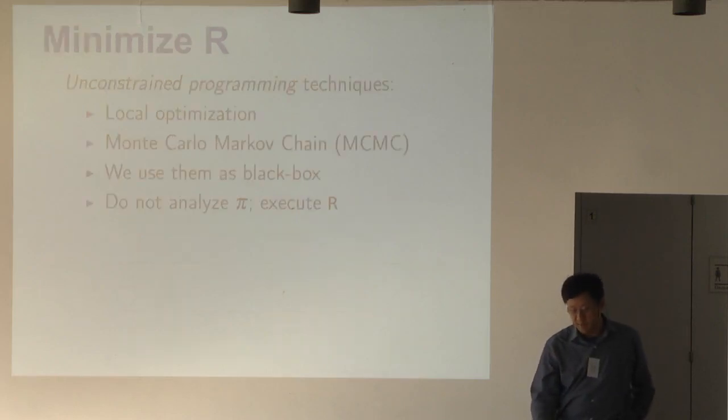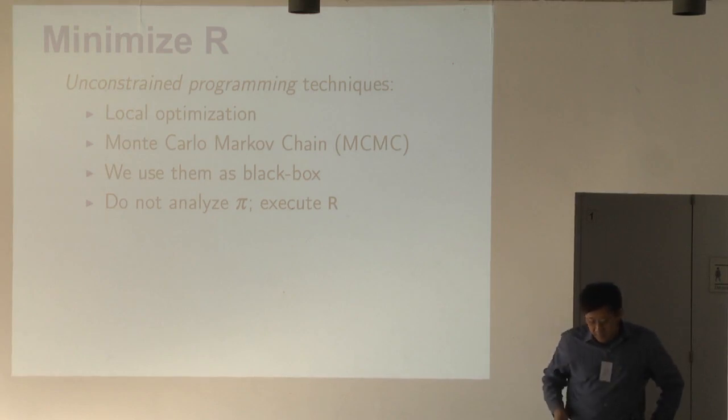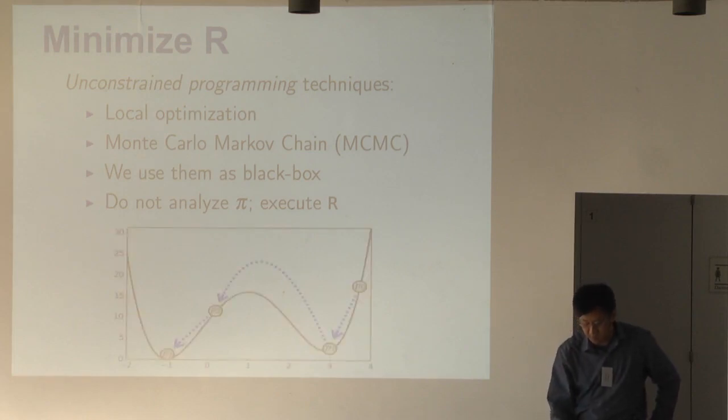Now we construct this program we want to minimize. The idea is, because the way we construct this R, we can apply local optimization to find the local minimum quickly, but we want to find the global optimum. So what we do is we want to use Monte Carlo Markov chain sampling, MCMC, to jump from one local optimum to another. And then we hopefully find a global optimum very quickly. We use these tools as black boxes. We do not analyze the constraints. We just run the R. We run the program. We don't analyze the program. We run the program. Here's the illustration. Suppose we start from this point. We use local optimization to quickly go into this local minimum, and then we use MCMC sampling to jump to another point, and then hopefully we go to a global minimum. If that's zero, that means we have found a model for the constraint.